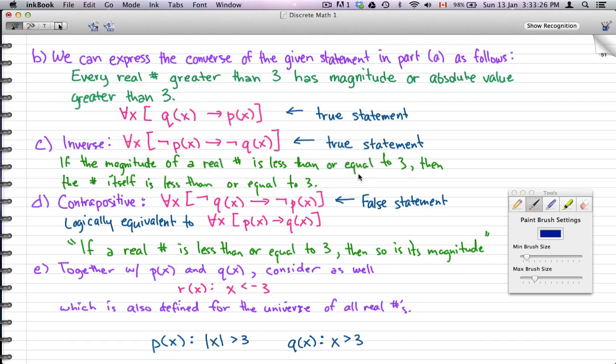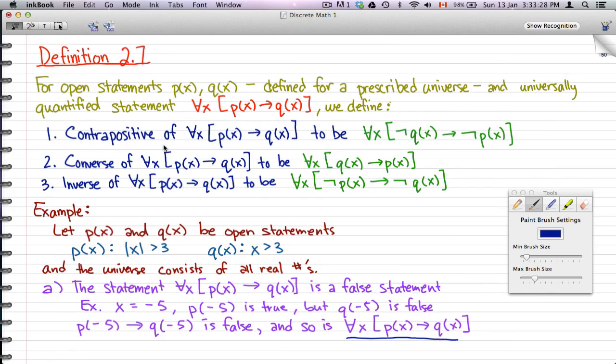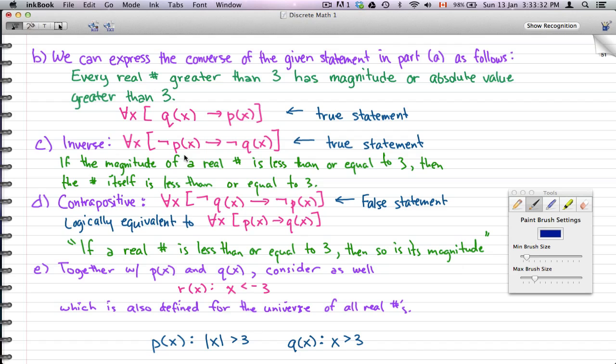The inverse, like the rule that we have here, we're just following that rule, and we're just negating that. So, what we're actually trying to find here is if the magnitude of a real number is less than or equal to 3, then the number itself is less than or equal to 3. And I have the definitions here, just for convenience. So, that's the same for our contrapositives.